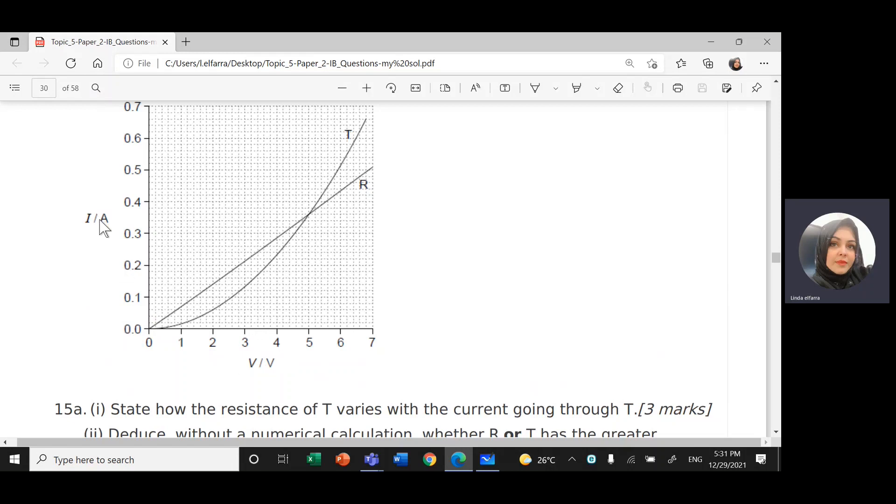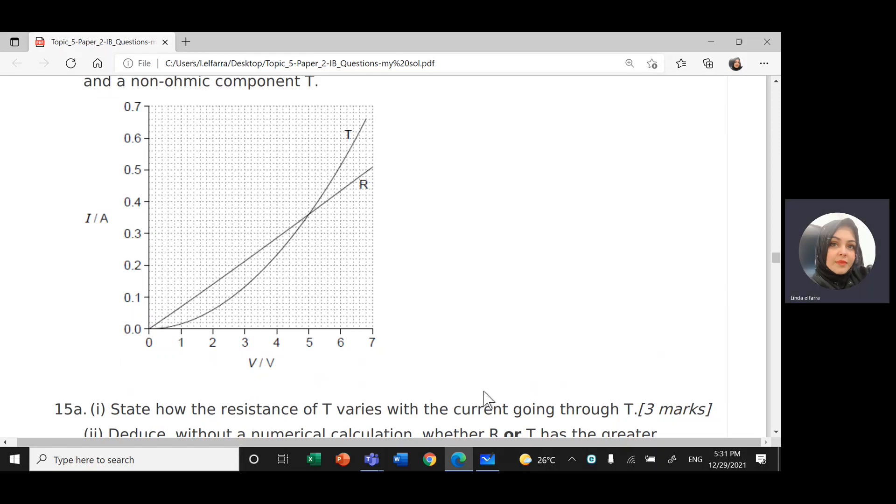Or as I increase the voltage, the current will increase, and I should get a straight line. Here, this one doesn't obey Ohm's law, which means if I increase the voltage, what will happen to the current and the resistance? Let's take values.